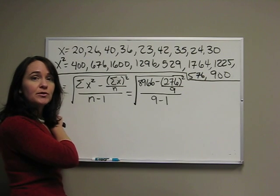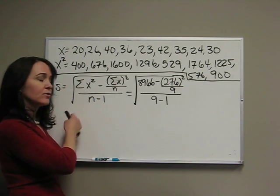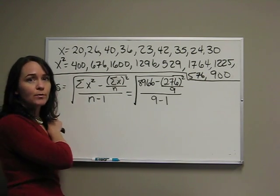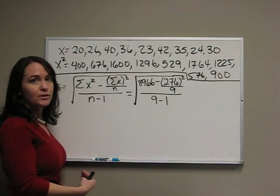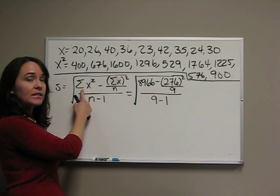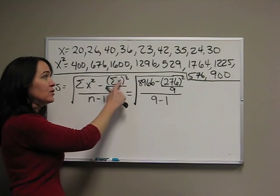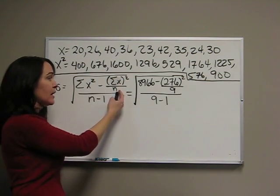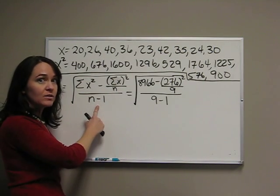Alright, since we're doing a sample, we're using statistics, Roman letters. We use S as the Roman letter for sample standard deviation. It is the square root of summation of x squared minus the summation of x all squared divided by n divided by n minus 1.